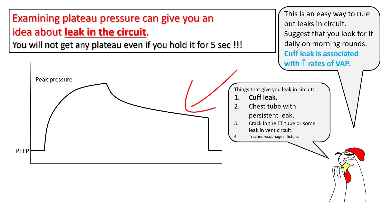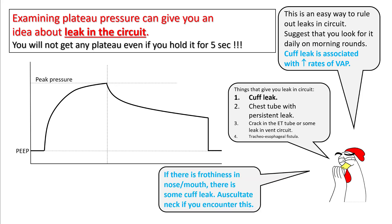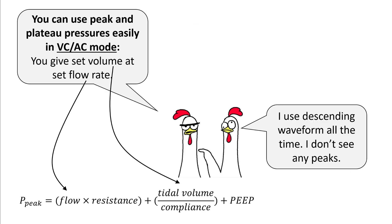When you see an inspiratory pause without any plateau pressure, think about a leak in the circuit. The most common cause is cuff leak, which is associated with increased rates of VAP, so identifying it is really important. Auscultate the neck for gurgling sounds and look for frothiness in the nose or mouth. Other causes of cuff leak include a chest tube with a persistent leak, another leak in the ventilator circuit, or — very rarely — a tracheoesophageal fistula.